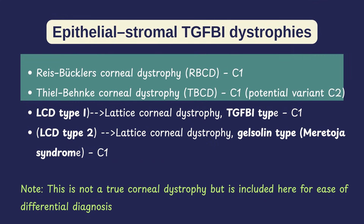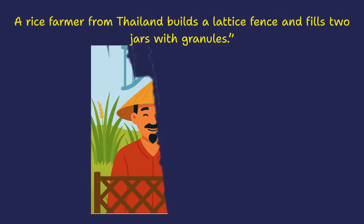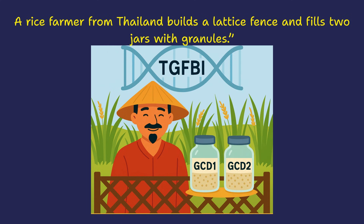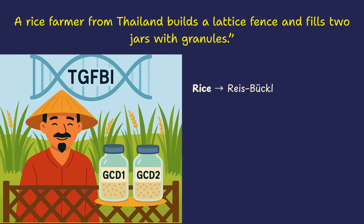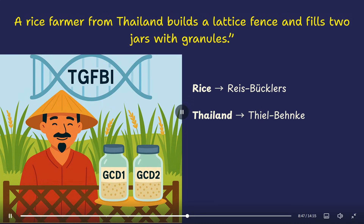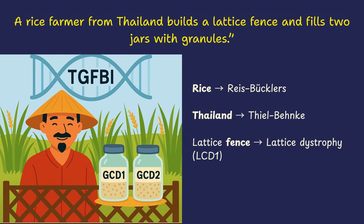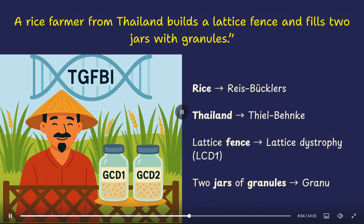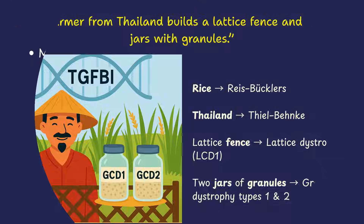Reis-Bücklers and Thiel-Behnke were previously known as Bowman's layer corneal dystrophies. For the memory hook: picture a rice farmer from Thailand building a lattice fence. Next to him are two jars filled with rice granules — one jar for type 1 and one for type 2. Floating behind him is a glowing DNA double helix labeled TGF-β1, reminding you of the genetic link. Rice → Reis-Bücklers; Thailand → Thiel-Behnke; lattice fence → Lattice type 1; two jars of granules → two types of granular dystrophies.